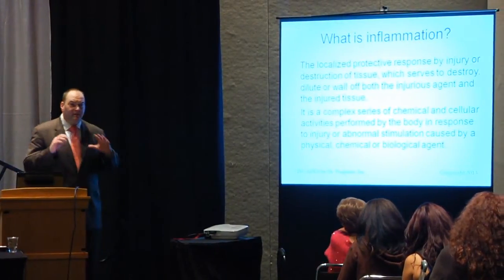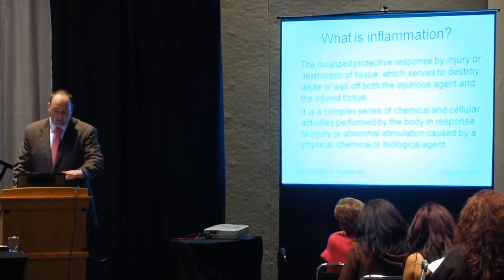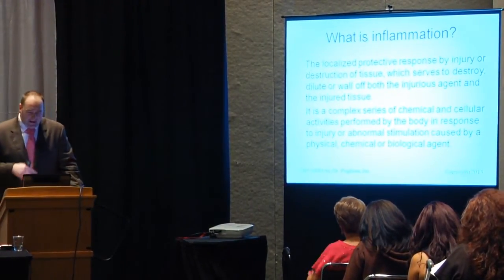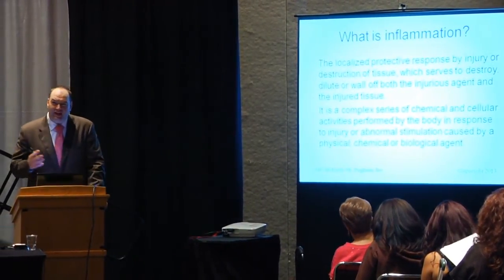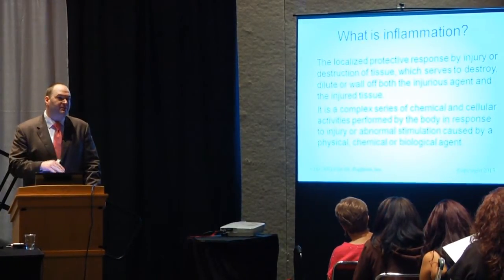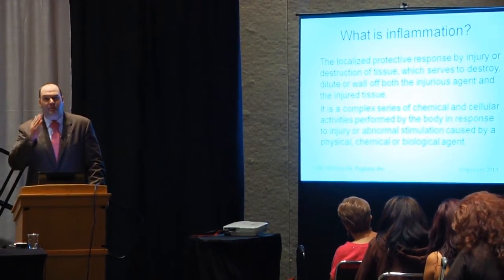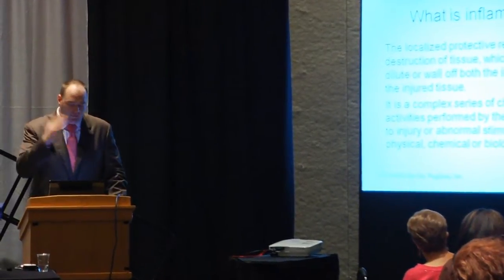What is inflammation? We want to give ourselves a good scientific definition here. Depending on which textbook you look at, we're going to review three different steps — some textbooks break it down into five, but we'll cover the major parts. It's defined as a localized protective response to an injury or destruction of tissue, which serves to destroy, dilute, or wall off both the injurious agent and the injured tissue. Basically, it's the body's response to damage that has been done to the body.